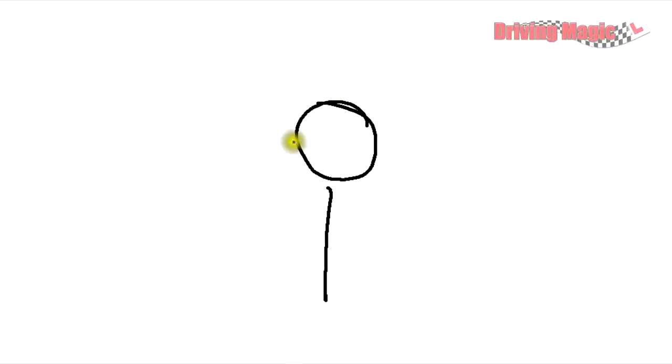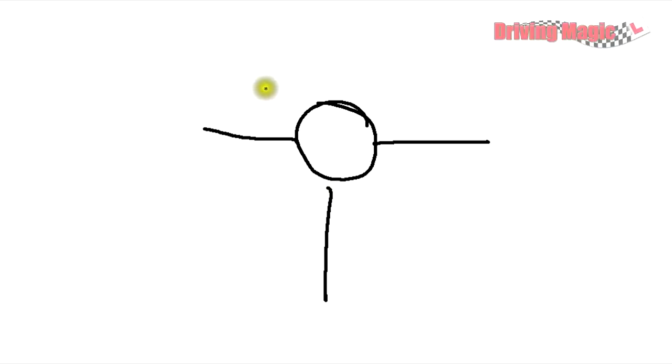Hi everybody. Quick video to help somebody out who's made a request on YouTube. I've been described a situation where you might come to a roundabout that's basically shaped like a T junction. So you've got one road entering, then you've got your roundabout and then a left and a right. They've asked me which one of the lanes, if there were two lanes, you'd use to turn right. The person who requested this very helpfully sent me a link to the actual map.